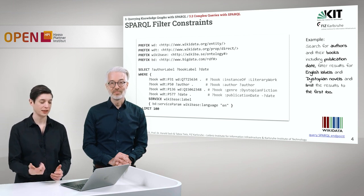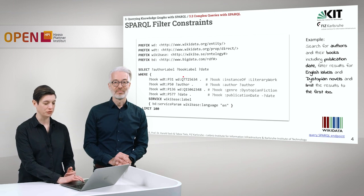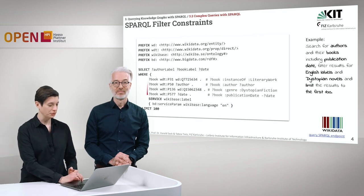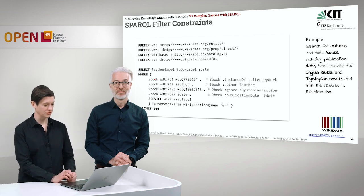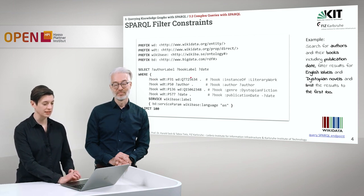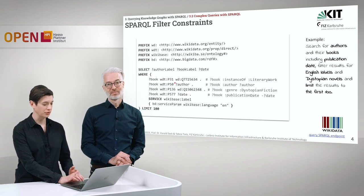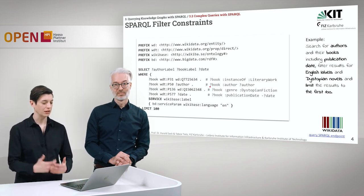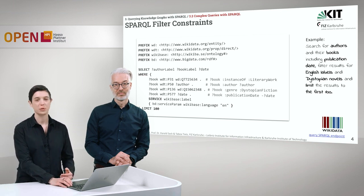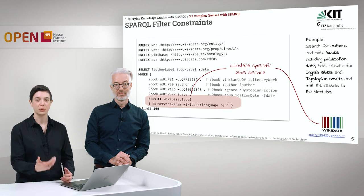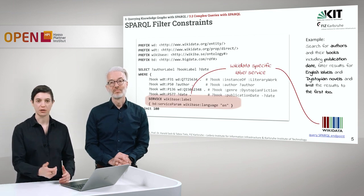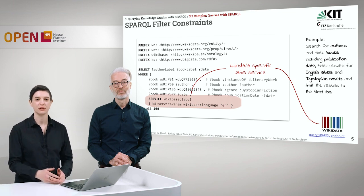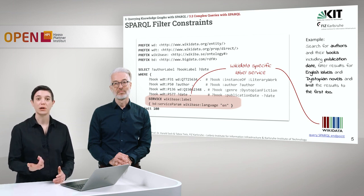As we know, for Wikidata we just have these IDs, so we've commented on what they actually mean. We have the variable book, the book's instance of literary work, some author, a genre, and a publication date. We want the book label to be in English, which we can do with the Wikidata label service using the SERVICE keyword. It's very convenient because it also reduces the query complexity.